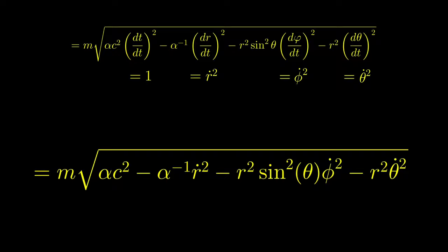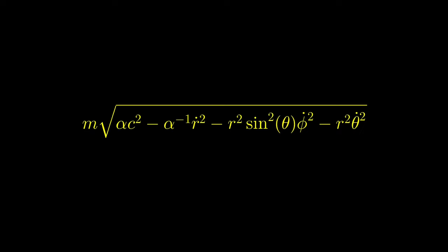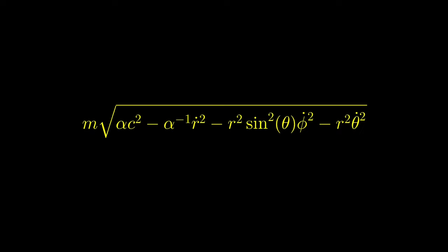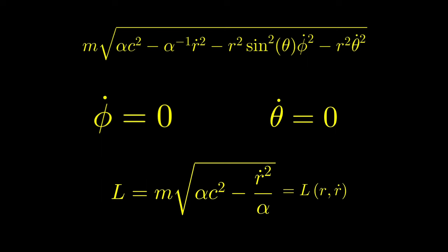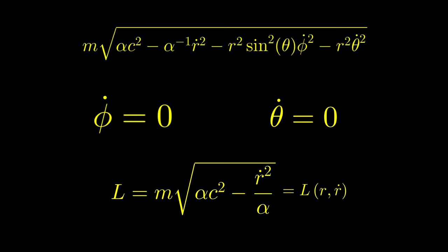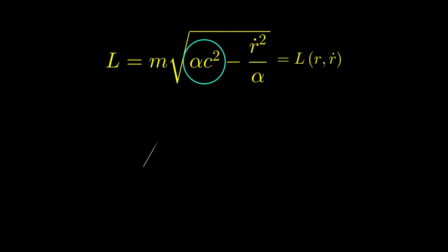Now, back to our original question. We want to know how it is possible that we observe the spaceship approaching the event horizon slower and slower with time. We simplify by assuming the spaceship is radially falling towards the black hole along a straight line. This means neither the longitude angle phi nor the co-latitude angle theta change with time, so phi-dot equals 0 and theta-dot equals 0. This simplifies the Lagrangian to m times the square root of alpha c squared minus r-dot squared divided by alpha.